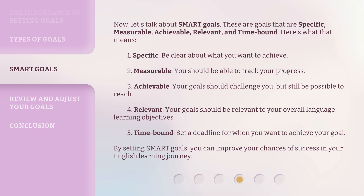1. Specific: be clear about what you want to achieve. 2. Measurable: you should be able to track your progress. 3. Achievable: your goals should challenge you, but still be possible to reach. 4. Relevant: your goals should be relevant to your overall language learning objectives. 5. Time-bound: set a deadline for when you want to achieve your goal. By setting SMART goals, you can improve your chances of success in your English learning journey.